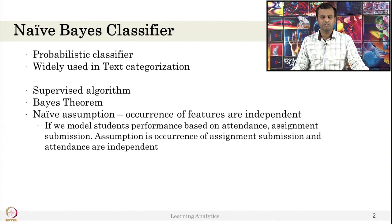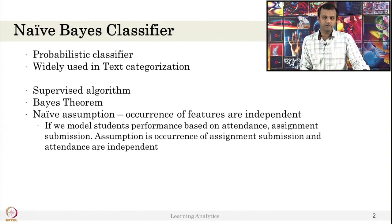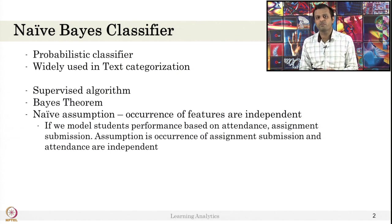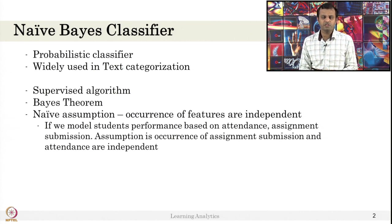What is Naive? There is a naive assumption here that is very important in Bayes theorem. Bayes theorem is very simple — you might have used it in probability classes — but this Naive Bayes classifier assumes that the features occurring in this are independent. That is the main assumption. Suppose if you try to model the student's performance based on their attendance, assignment submission, or some engagement in the class, you have to assume that these occurrences are independent.